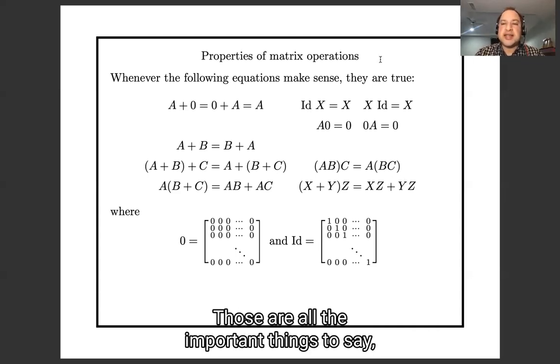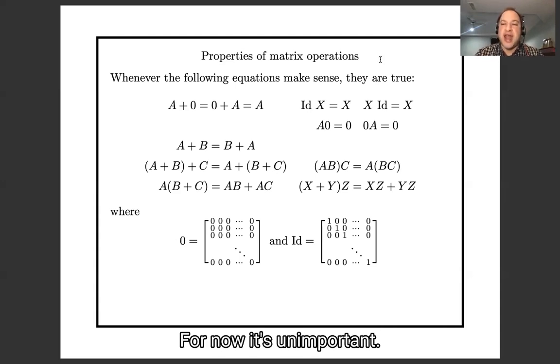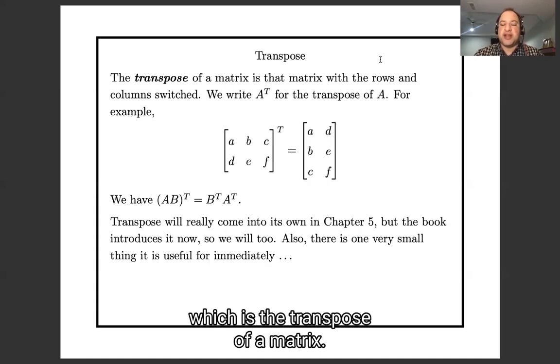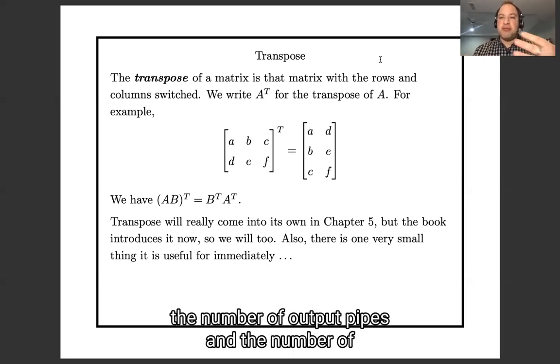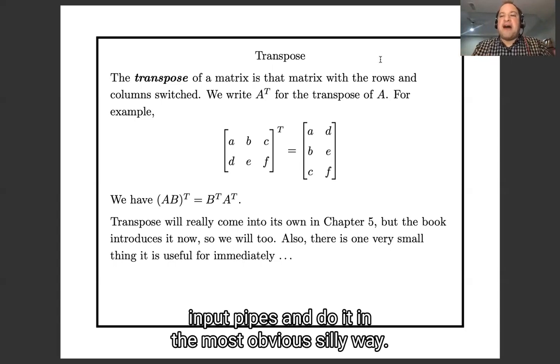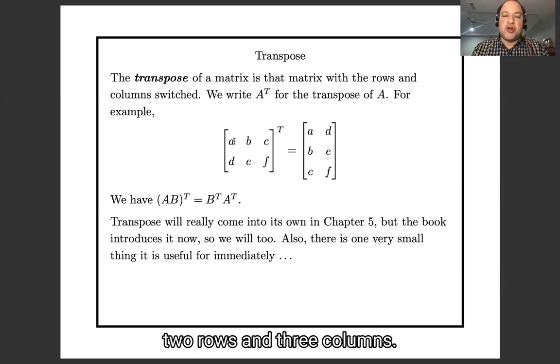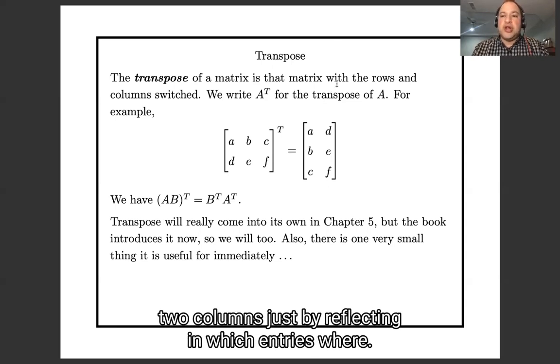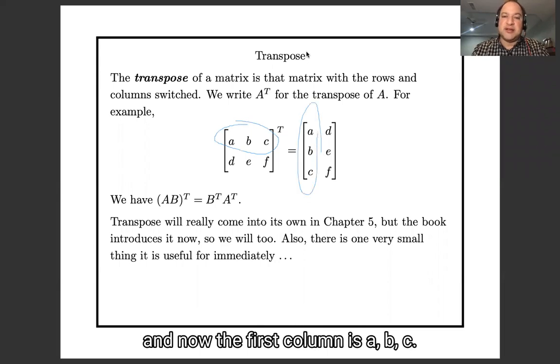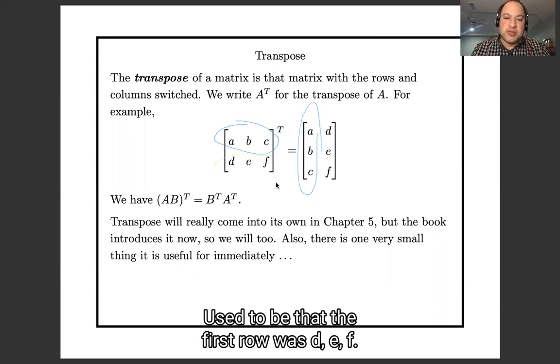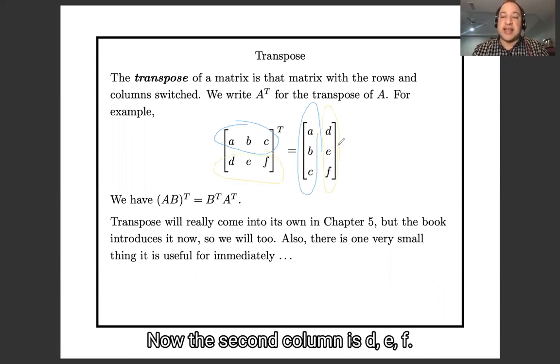Those are all the important things to say, but I'm also going to use this lecture to squeeze in one unimportant thing - or for now it's unimportant, it will be important later - which is the transpose of the matrix. So one last piece of notation. The transpose is what you get if you switch the rows and the columns. So think of it as switching the number of output pipes and the number of input pipes, and do it in the most obvious silly way. So here I have a matrix which has two rows and three columns, and I turn it into a matrix which has three rows and two columns, just by reflecting which entry is where. So it used to be that the first row was ABC, and now the first column is ABC. It used to be that the second row was DEF, now the second column is DEF.